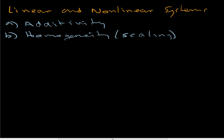To give you an idea what these two things mean, let's look at a very simple equation: y equals ax. We all agree this is a linear equation, but why? In order for this to be linear it has to have both properties. Additivity means if I apply two separate inputs — two separate x values — record the two outputs, then record the sum of the inputs and the corresponding output, if the two outputs are the same then the system obeys additivity.